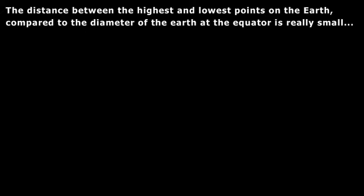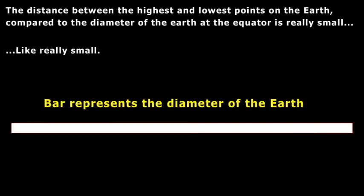So the distance between the highest and lowest points on Earth compared to the diameter of the Earth at the equator is very, very small. And I'm going to graphically show you this. Like really small. Say this bar represents the diameter of the Earth. And say the left side is a North Pole, the bottom side is the South Pole.